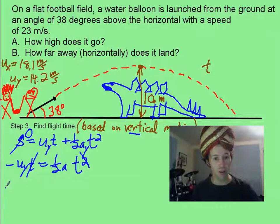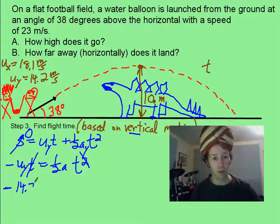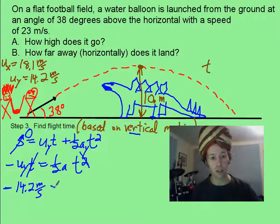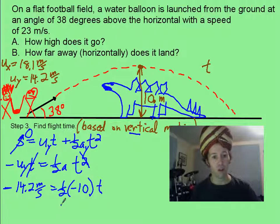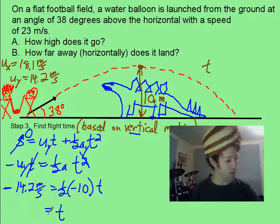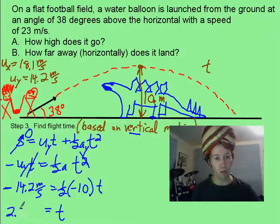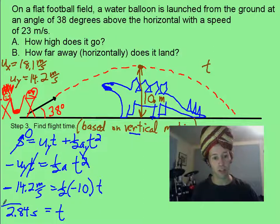And so now you fill in your 14.2 meters per second. You fill in your value for a, that's going to be negative 10. And you solve for t. And that turns out to be about 2.84 seconds of flight time.